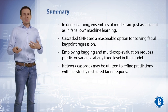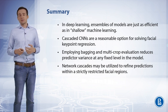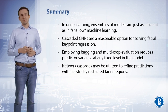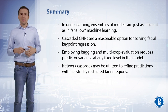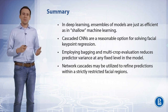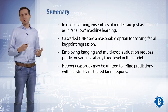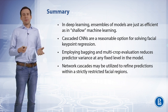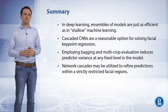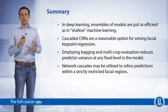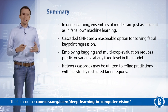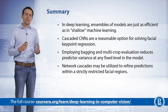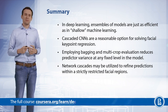To summarize: in deep learning, ensembles of models work just as well as in classical machine learning. We can cascade CNNs, which is a reasonable approach for solving facial keypoint regression. Employing bagging or multi-crop evaluation is a way to reduce predictor variance in deep learning. And network cascades are an option when we want to refine predictions within strictly restricted facial regions.